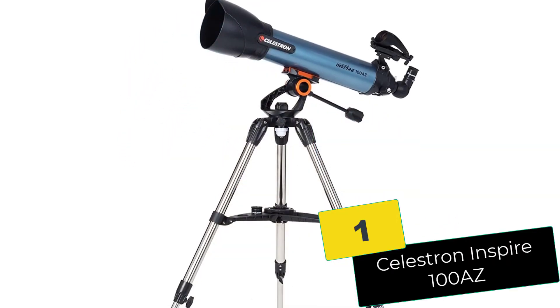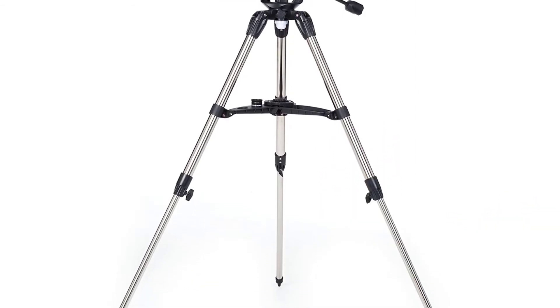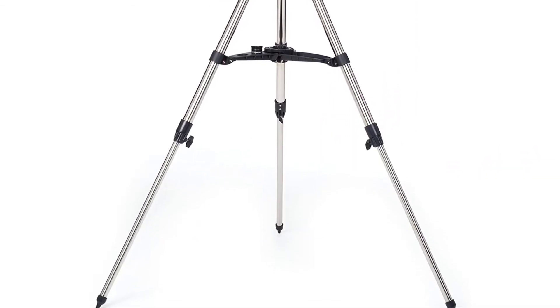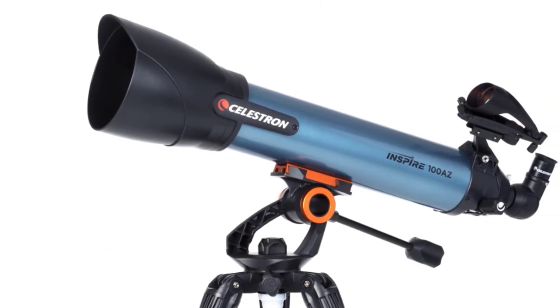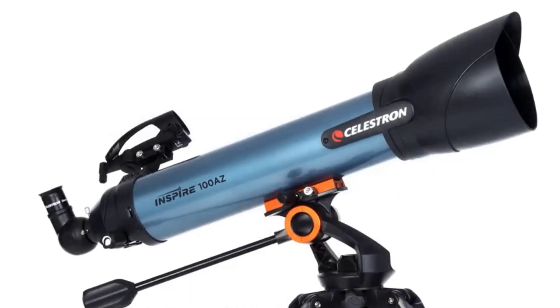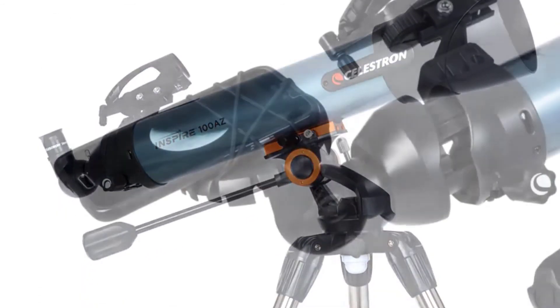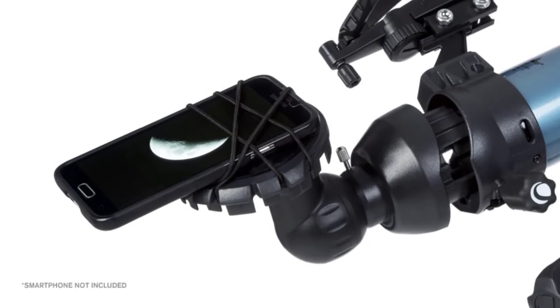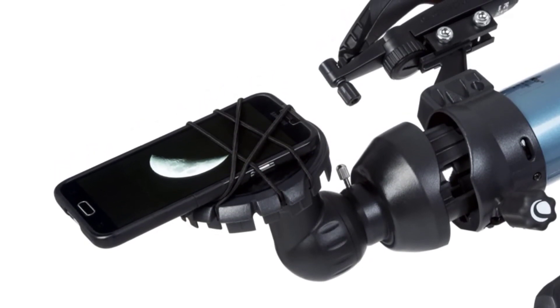And finally at number one, we have the Celestron Inspire 100AZ. Beginner and intermediate astronomers will love how easy this telescope is to use, as well as its great features. The Celestron Inspire 100AZ combines a 100mm aperture with its short tube to give you an extra wide field of view. This makes it easier to see objects that are a bit fainter in the sky.